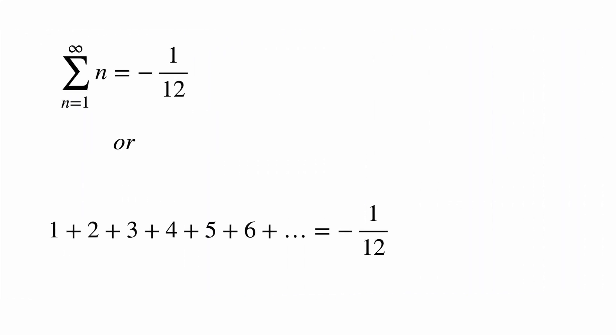For those of you who are unfamiliar with this series, which has come to be known as the Ramanujan infinite sum, it states that if you add all the natural numbers, that is 1, 2, 3, 4, and so on, all the way to infinity, you will find that it is equal to minus 1 twelfth.